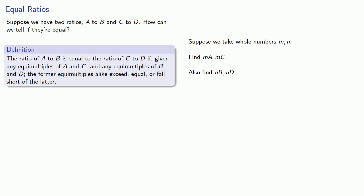Now, I might not be able to compare the copies of A to the copies of C. But since A and B do have a ratio, I know I could compare the copies of A to the copies of B. And one of three things will happen. MA will either be greater than, exceed, equal to, or fall short of NB.